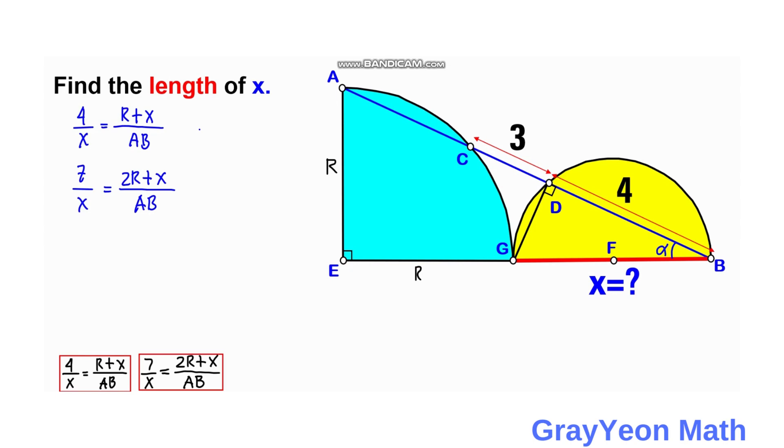Going back, if we are to use the two equations that we have got earlier, we can actually divide this first equation by the second equation. This X cancels out. On the left-hand side, we have 4 over 7, equal to on the right, we just have to cancel AB, and we have R plus X over 2R plus X. If we cross-multiply, we have 4 times 2R plus X equals 7 times R plus X.